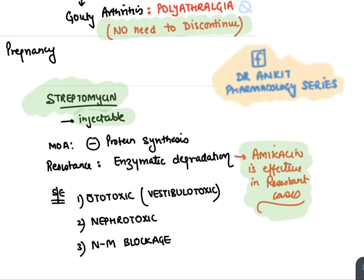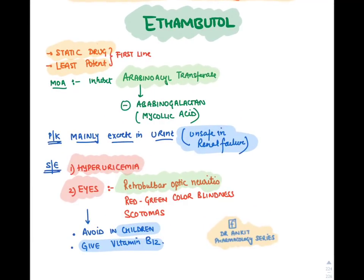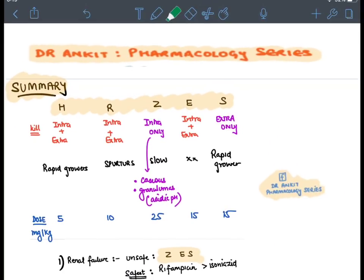Streptomycin: the only first-line injectable agent, an aminoglycoside. Side effects: ototoxicity (most vestibulotoxic drug), nephrotoxicity, and neuromuscular blockade. Amikacin is effective in streptomycin-resistant cases. Ethambutol: the only first-line bacteriostatic drug — all other drugs are bactericidal. It inhibits arabinosyltransferase enzyme. It is excreted in urine, so unsafe in renal failure unlike rifampicin. It causes hyperuricemia like pyrazinamide. The main side effect of ethambutol is ocular: retrobulbar neuritis, red-green color blindness, and scotoma. As it is a painless loss of vision, it should be avoided in children who cannot comprehend vision loss. Vitamin B12 may also be given in ethambutol cases.